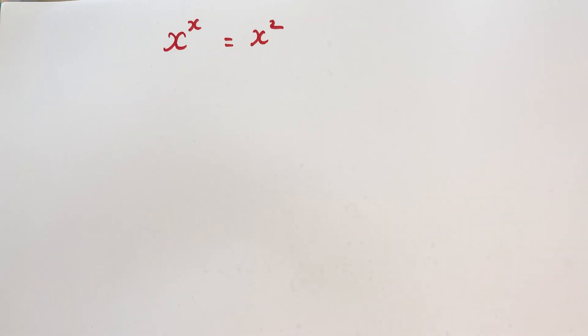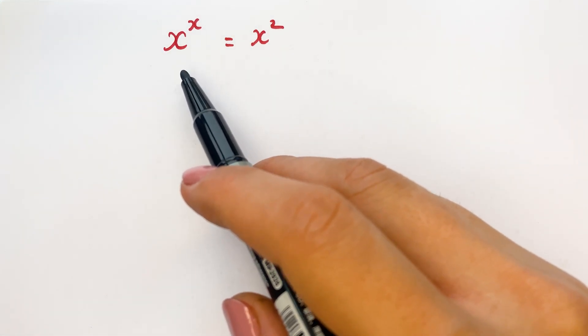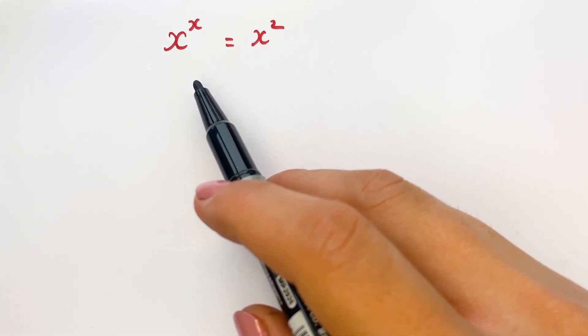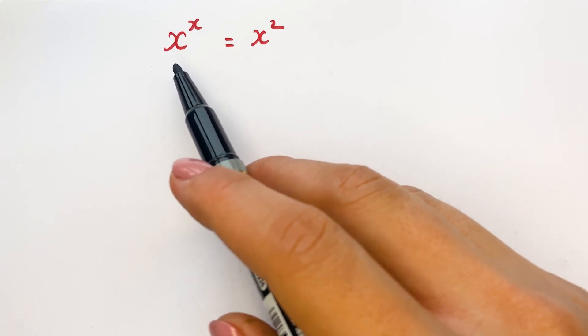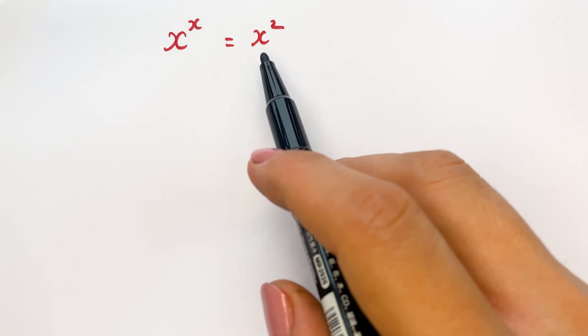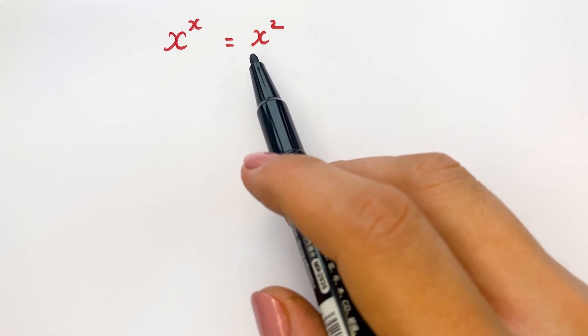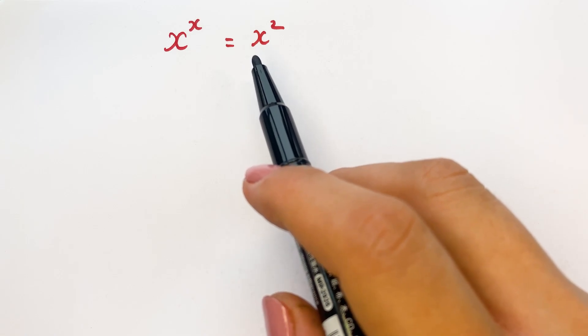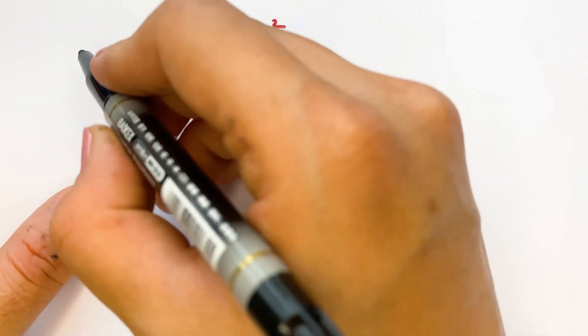Hello everyone, how to find the value of x in the exponential equation x^x = x^2. Well, firstly you need to take a natural logarithm on both sides.